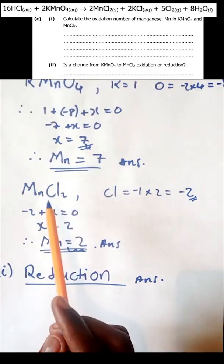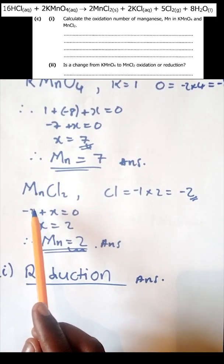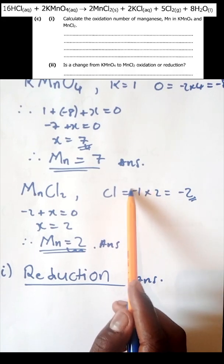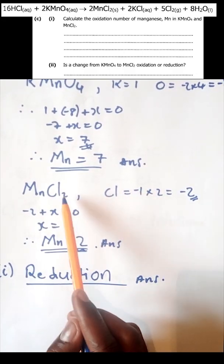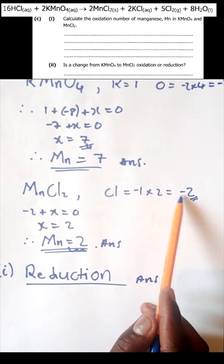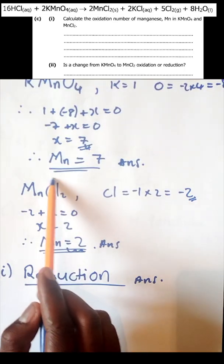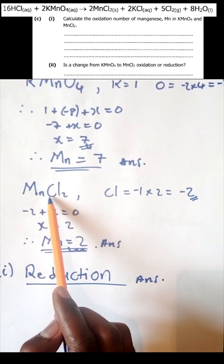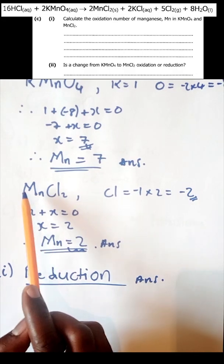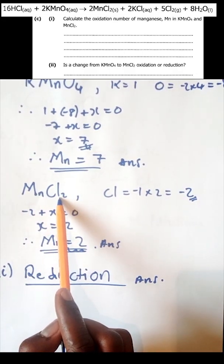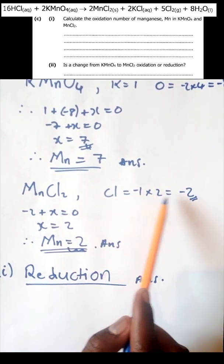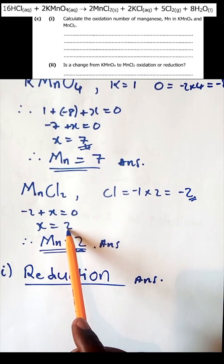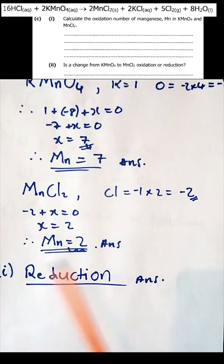Now calculate the oxidation state of manganese in manganese chloride (MnCl₂). Chlorine's oxidation state is negative 1, and with 2 chlorine atoms the total is negative 2. Since MnCl₂ is a neutral compound, the sum of oxidation states must equal 0. So x (manganese) plus negative 2 equals 0, giving x equals positive 2. The oxidation state of manganese in MnCl₂ is positive 2.